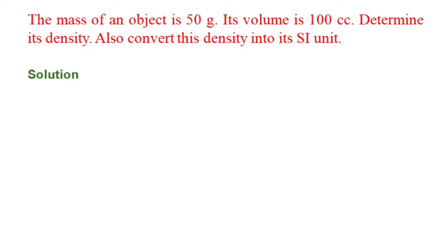The mass of the object is given as 50 grams, its volume is 100 cc. To determine the density, we can apply this formula: Density equals mass divided by volume. If we put the values, mass is 50 grams, volume 100 cc. By dividing these two, we get 0.5.